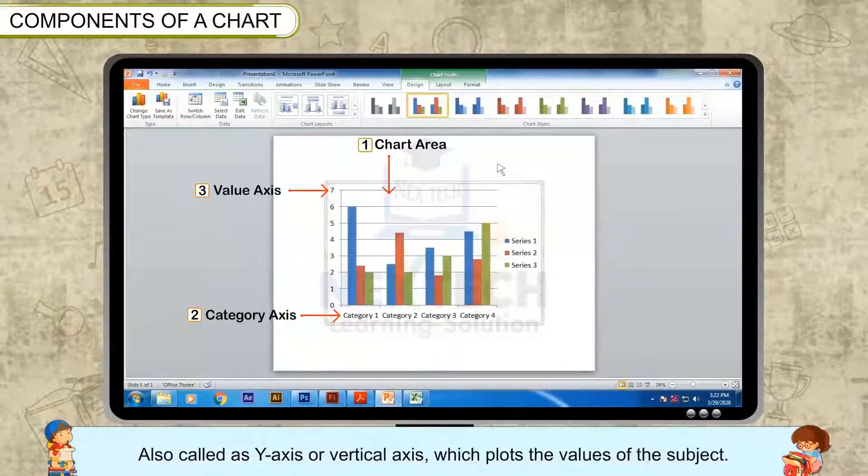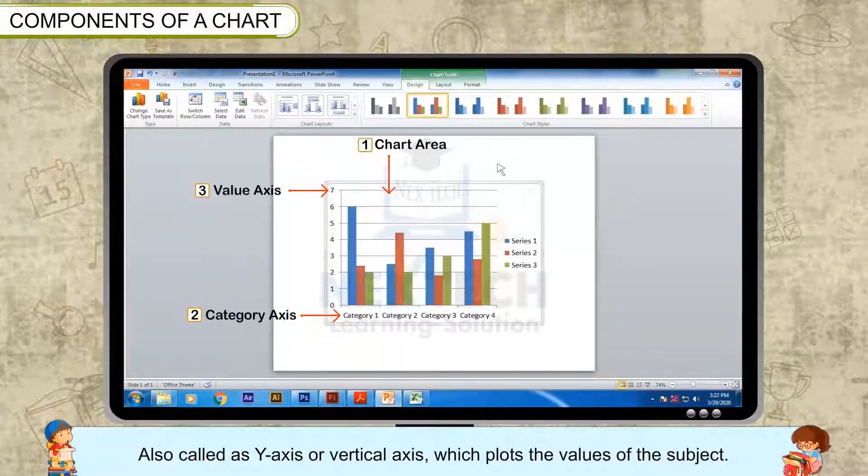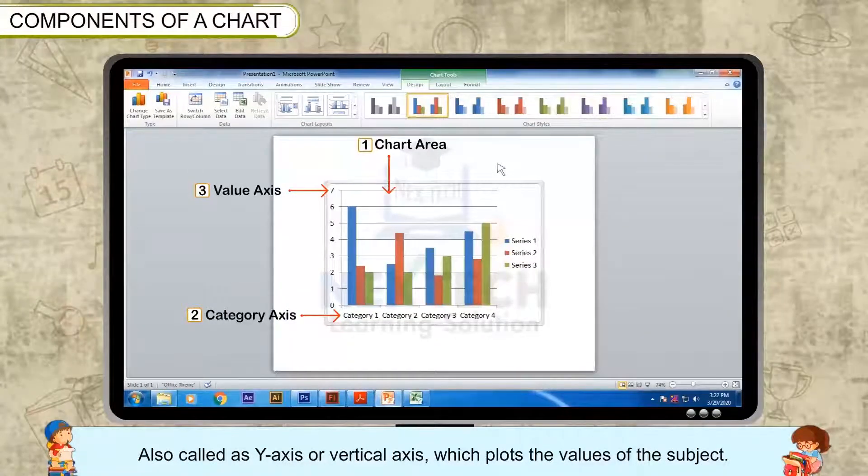Value axis: Also called as y-axis or vertical axis, which plots the values of the subject.